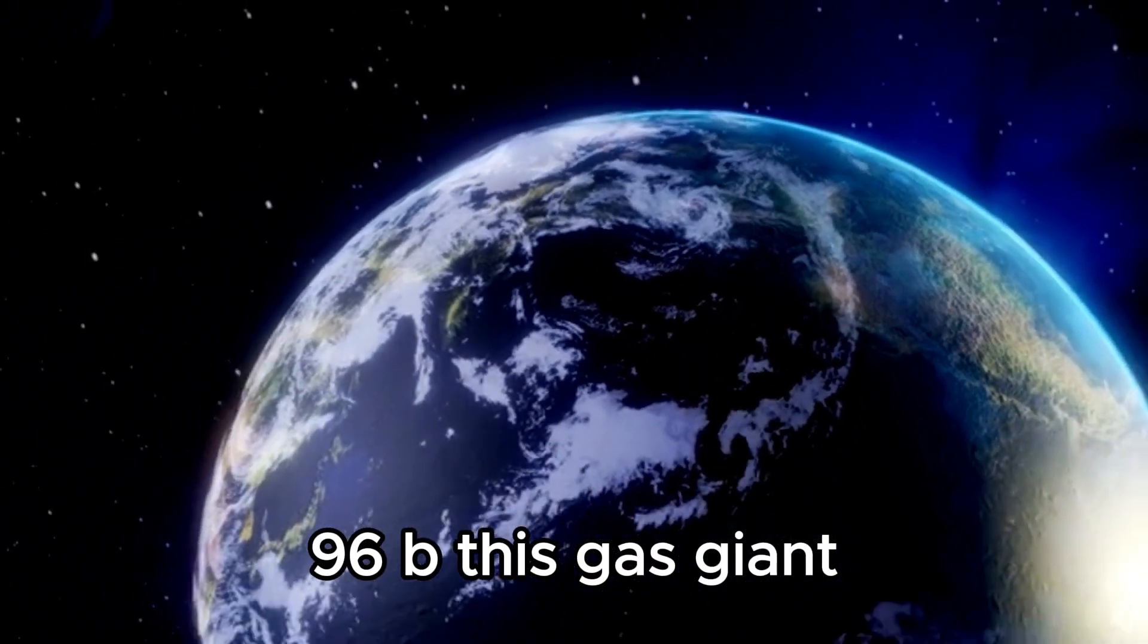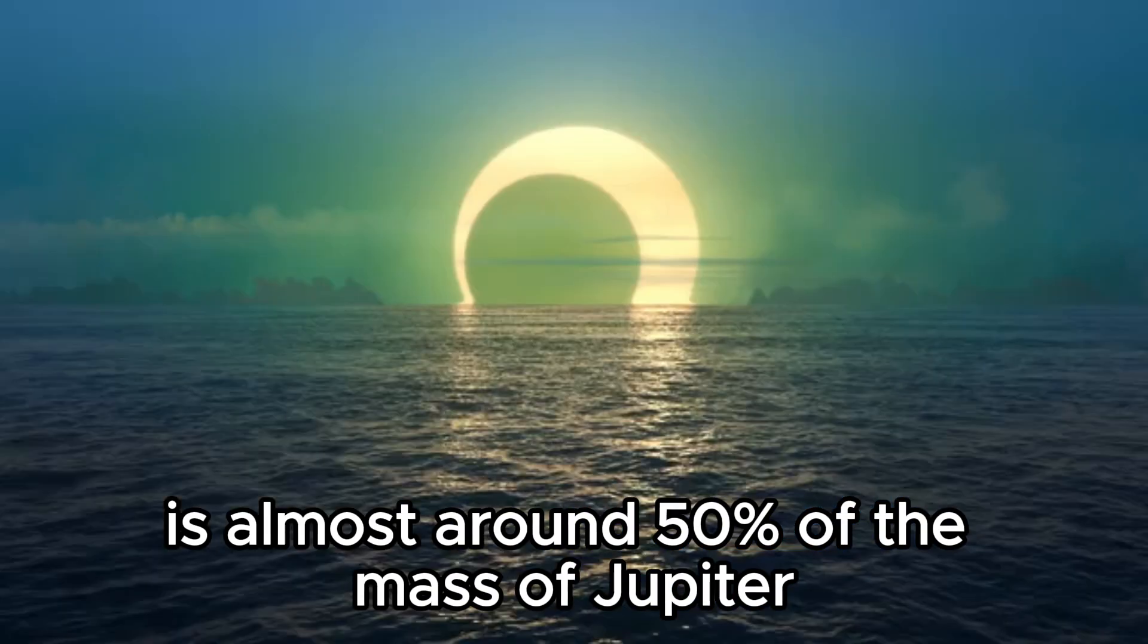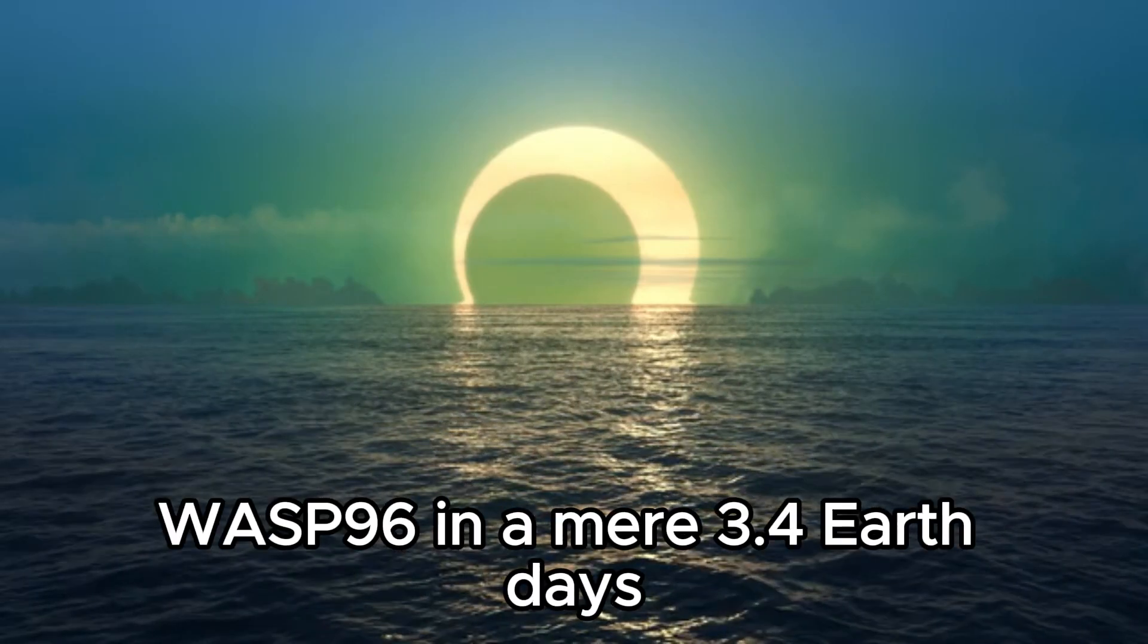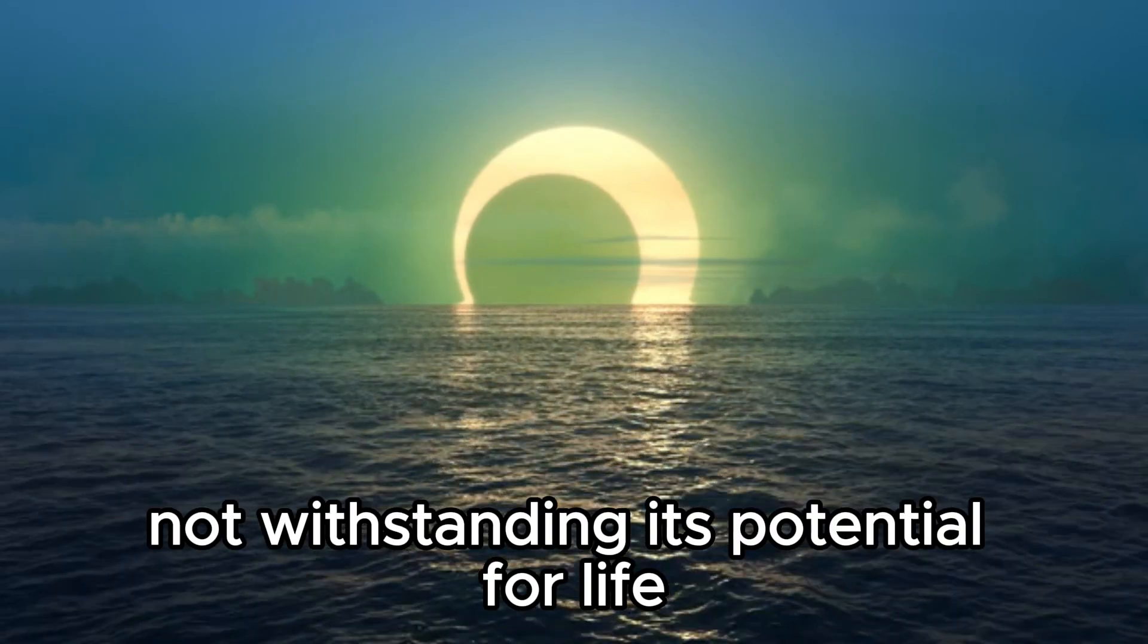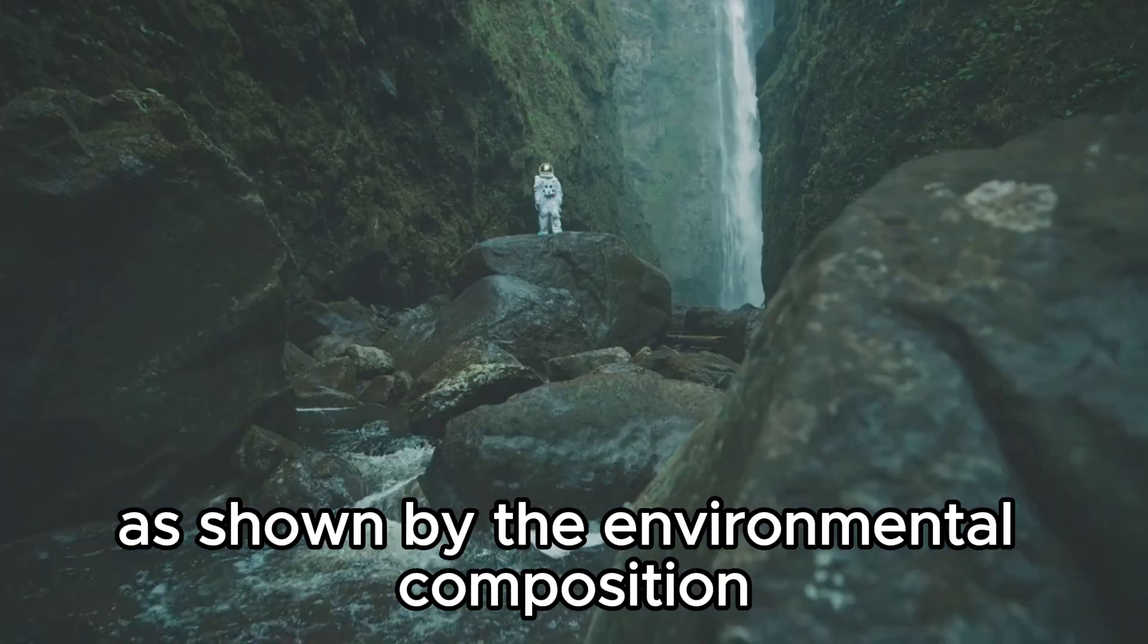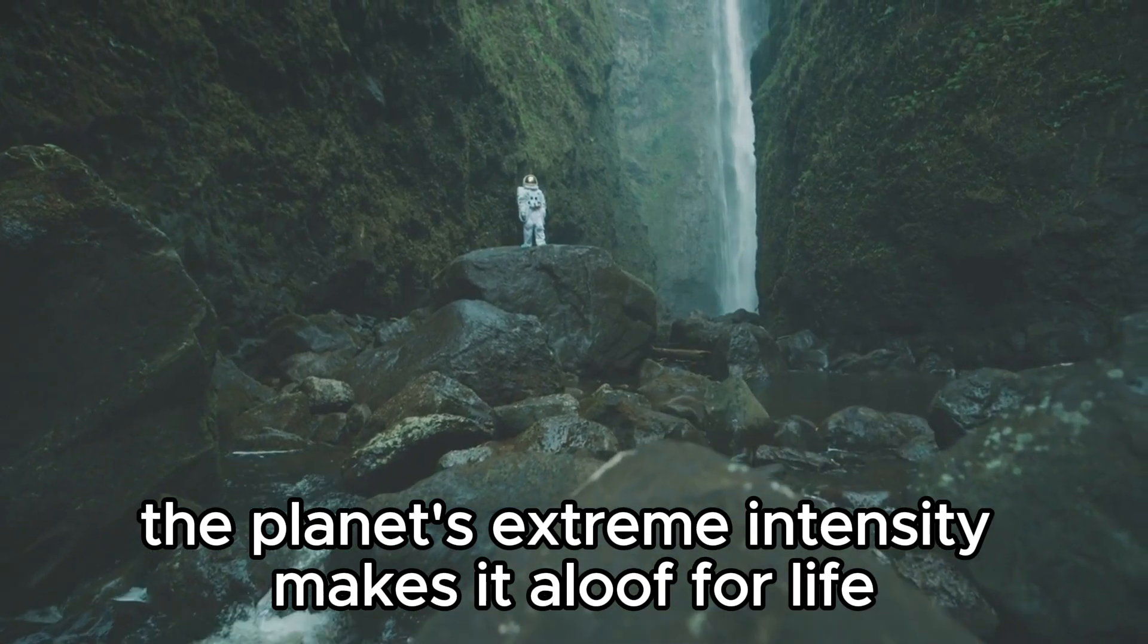WASP-96b, this gas giant found by the Wide Angle Search for Planets project, is almost around 50% of the mass of Jupiter and circles its host star, WASP-96, in a mere 3.4 Earth days. Notwithstanding its potential for life as shown by the environmental composition, the planet's extreme intensity makes it inhospitable for life.